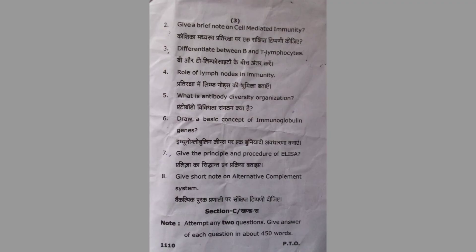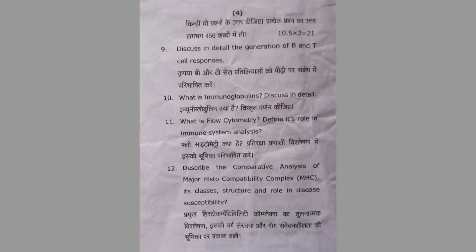Question Number Seven: Give the principle and procedure of ELISA. Question Number Eight: Give a short note on the alternative complement system. Section C, Question Number Nine: Discuss in detail the generation of B and T cells responsiveness.